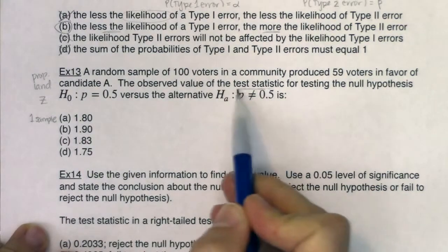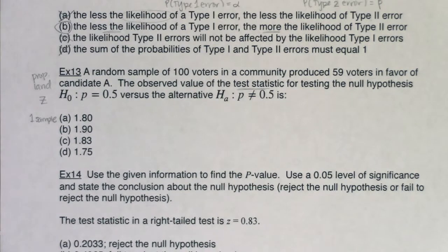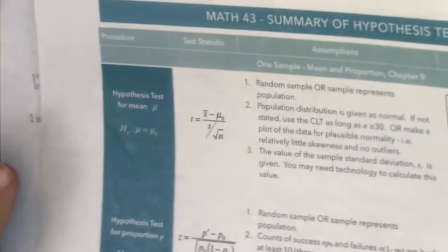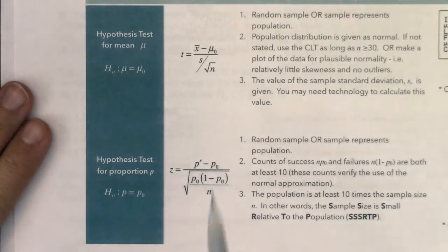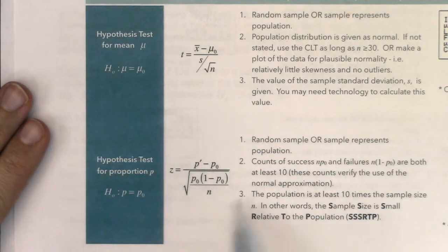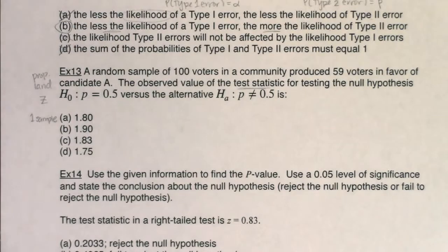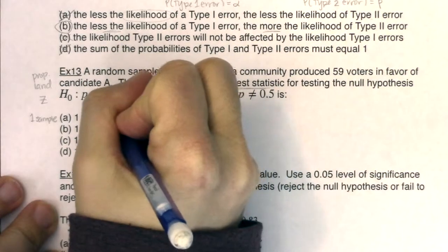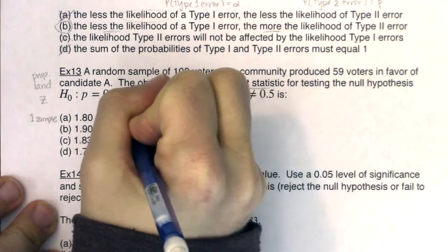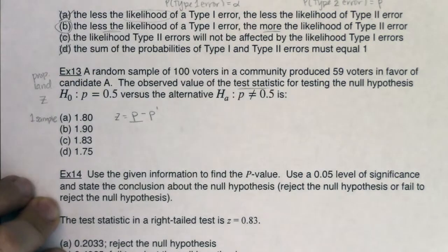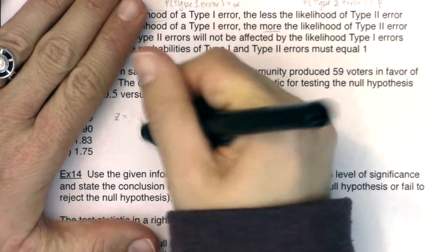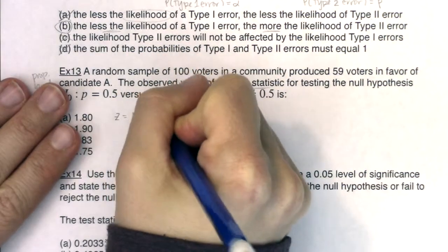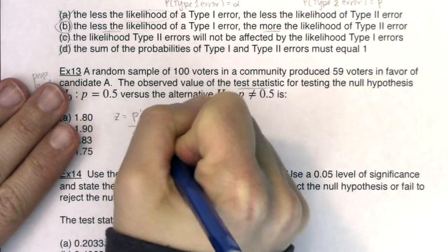The question asks for the value of the test statistic — that's the number from part 9 of your write-up. The formula for the Z test statistic is: Z equals p-prime minus the null proportion, divided by the standard error. That's value minus mean over standard deviation. P-sub-0 is our null proportion. The standard error is the square root of P times (1 minus P) divided by n.